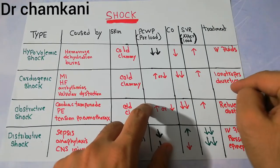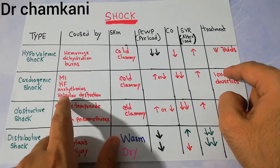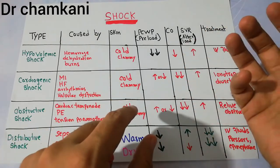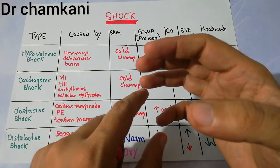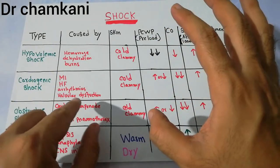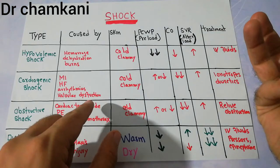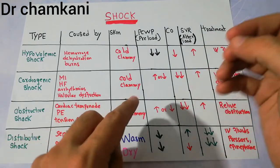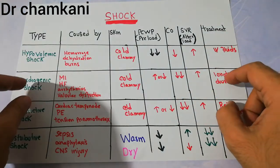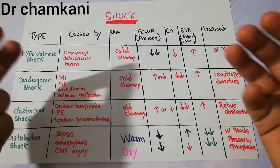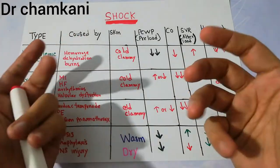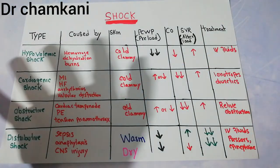Treatment for cardiogenic shock may include diuretics in heart failure, or other options depending on the cause — inotropics for pump failure, antiarrhythmics for arrhythmias, or surgery for valvular dysfunction. So depending upon the type of problem in the heart, cardiogenic shock can be treated with inotropics, diuretics, or any other appropriate drug. The treatment options are many.